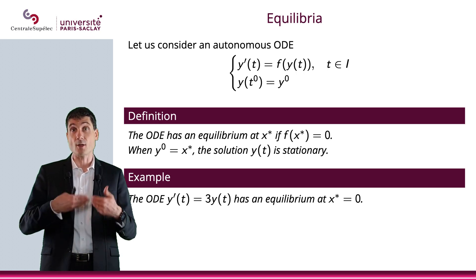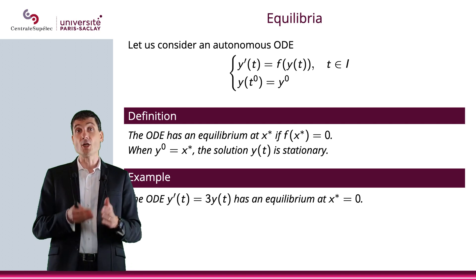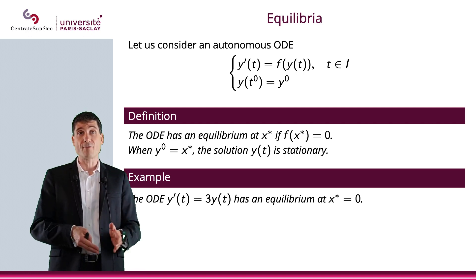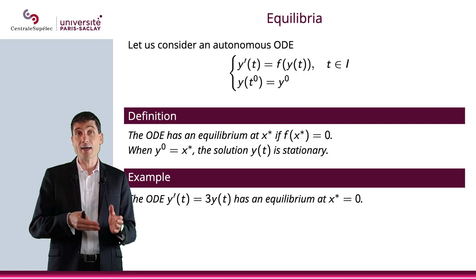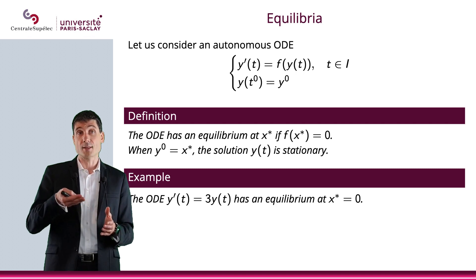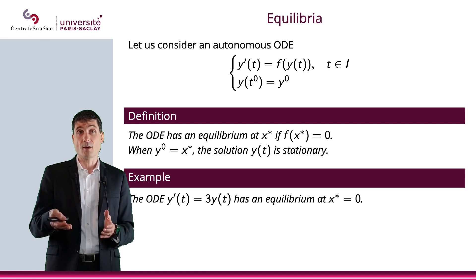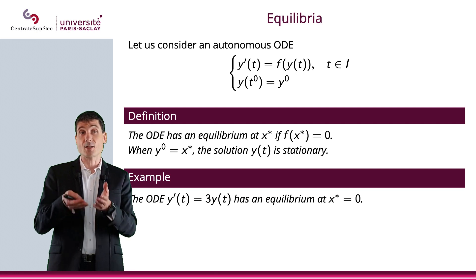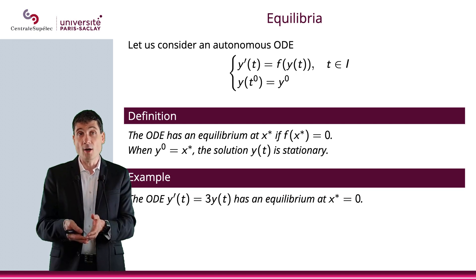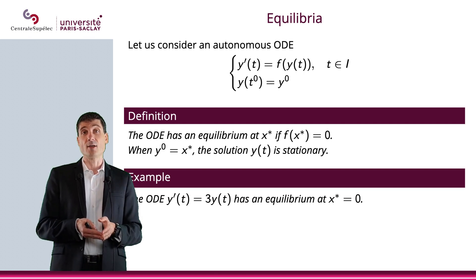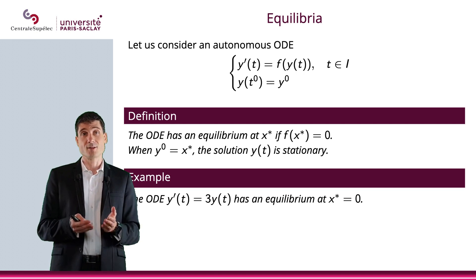The consequence of the equilibrium is that when y0 equals x star, the solution will be stationary. So x star equals 0 will be the equilibrium to the ODE y' of t equals 3y of t, meaning that if you consider the initial value problem where y of 0 equals y0 equals x star, then you will have a stationary solution.